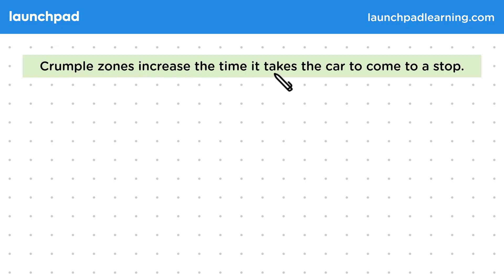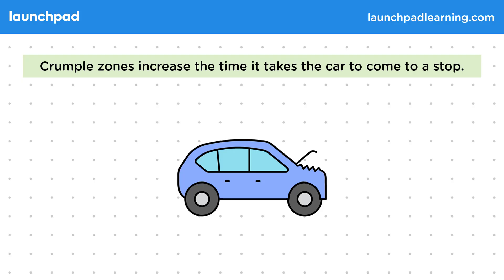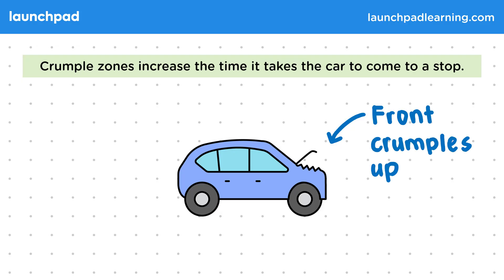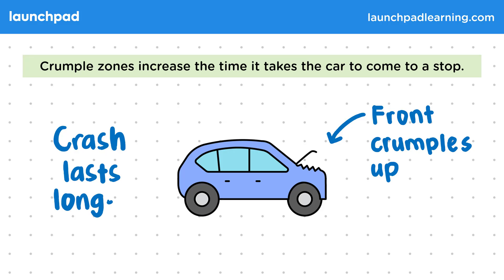Crumple zones increase the time it takes the car to come to a stop. A crumple zone is part of the car which is designed to collapse on itself when experiencing a large force. Here we see a car that's just been in a crash. Notice that the front of the car hasn't just been bent out of shape — it's completely crumpled up. By crumpling, the car doesn't immediately stop from the contact force of the crash. It continues moving and gradually slows down as the crumple zone collapses, meaning the crash lasts longer and the average force on the car decreases.